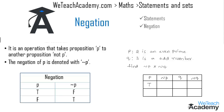If statement p is a true statement then the truth value for not p would be false, and when statement p is false then the truth value for not p would be true. Coming to statement q, if it is a true statement then the truth value for not q would be false, and if it is a false statement then the truth value for not q would be true.